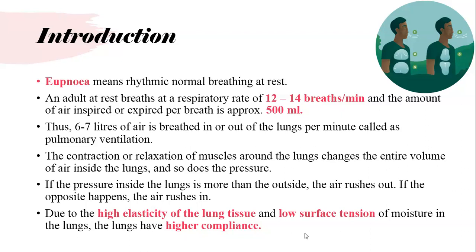The normal rhythmic breathing that you and I are doing right now is termed as eupnea. Eupnea means rhythmic normal breathing at rest. An adult with a breathing rate of 12 to 14 breaths per minute has approximately 500 ml of air taken in or expired out.